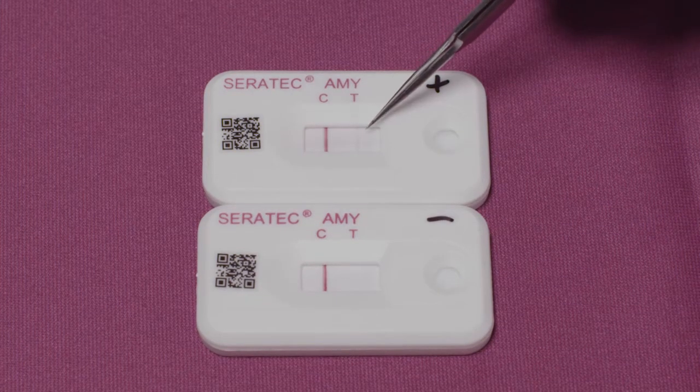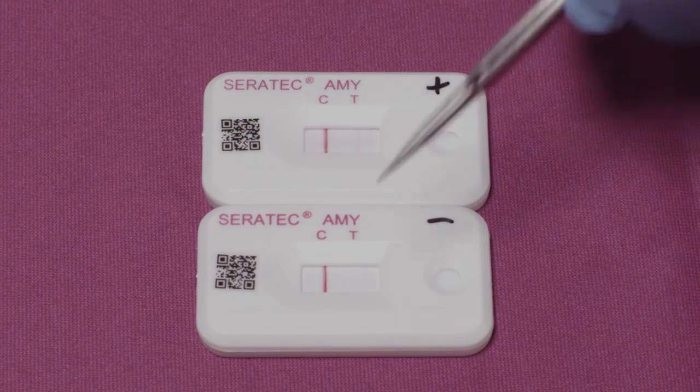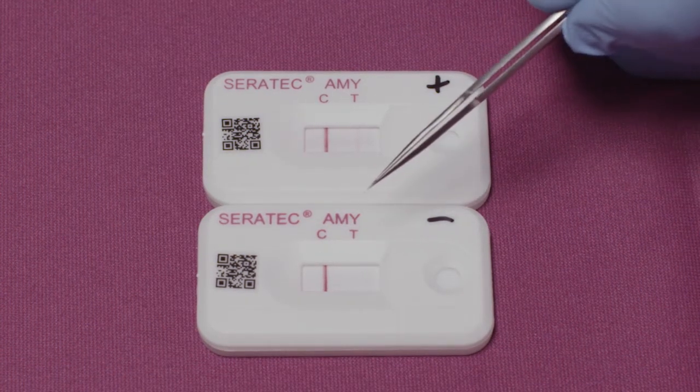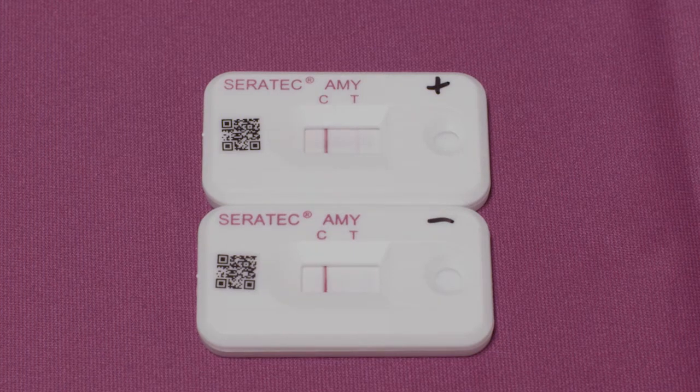A positive result will show two lines. A negative result will show one line. If the control line does not develop, the result is invalid and the test should be repeated.